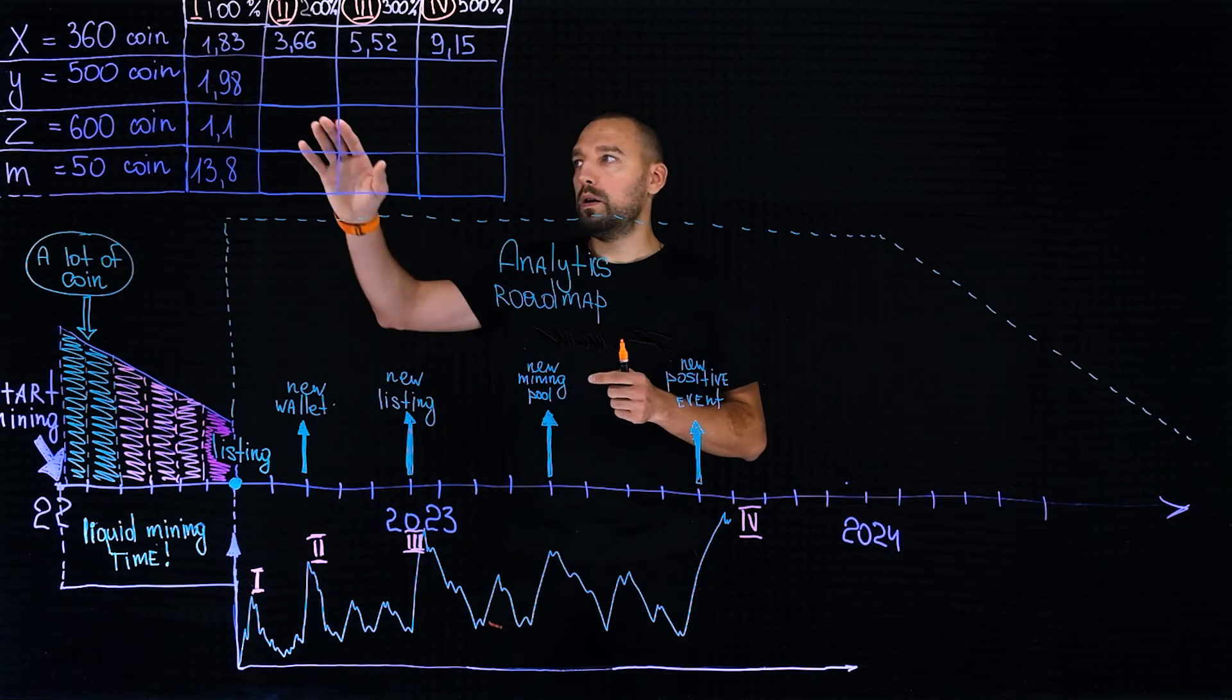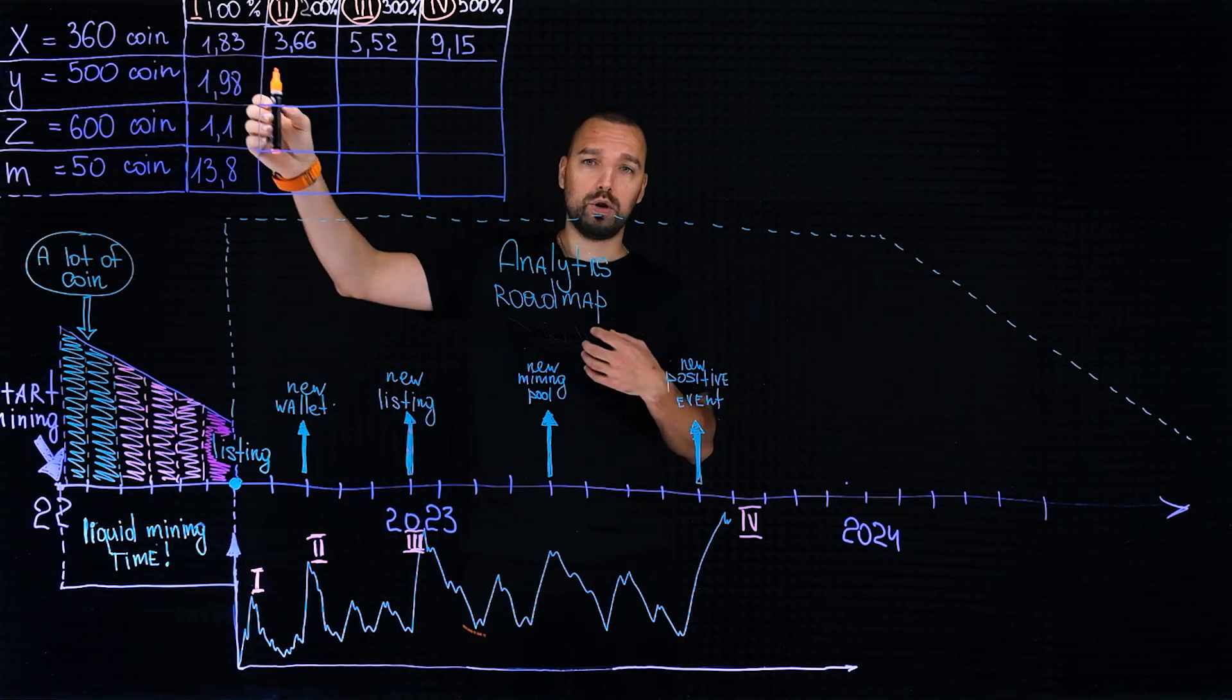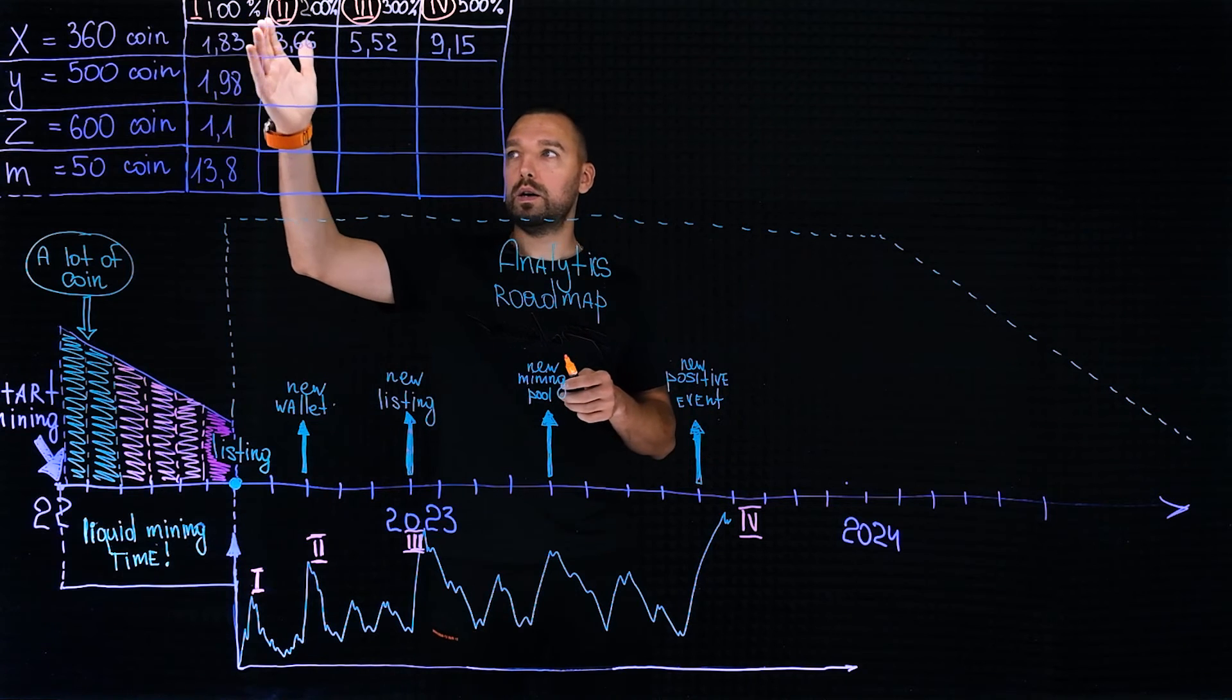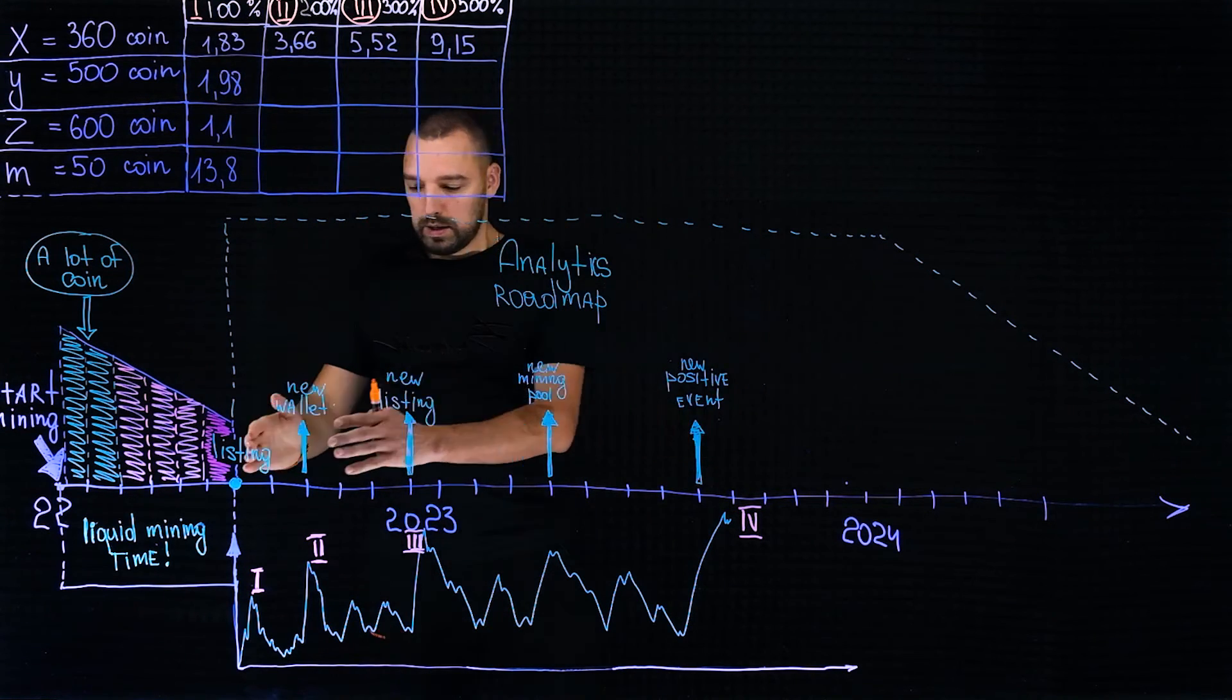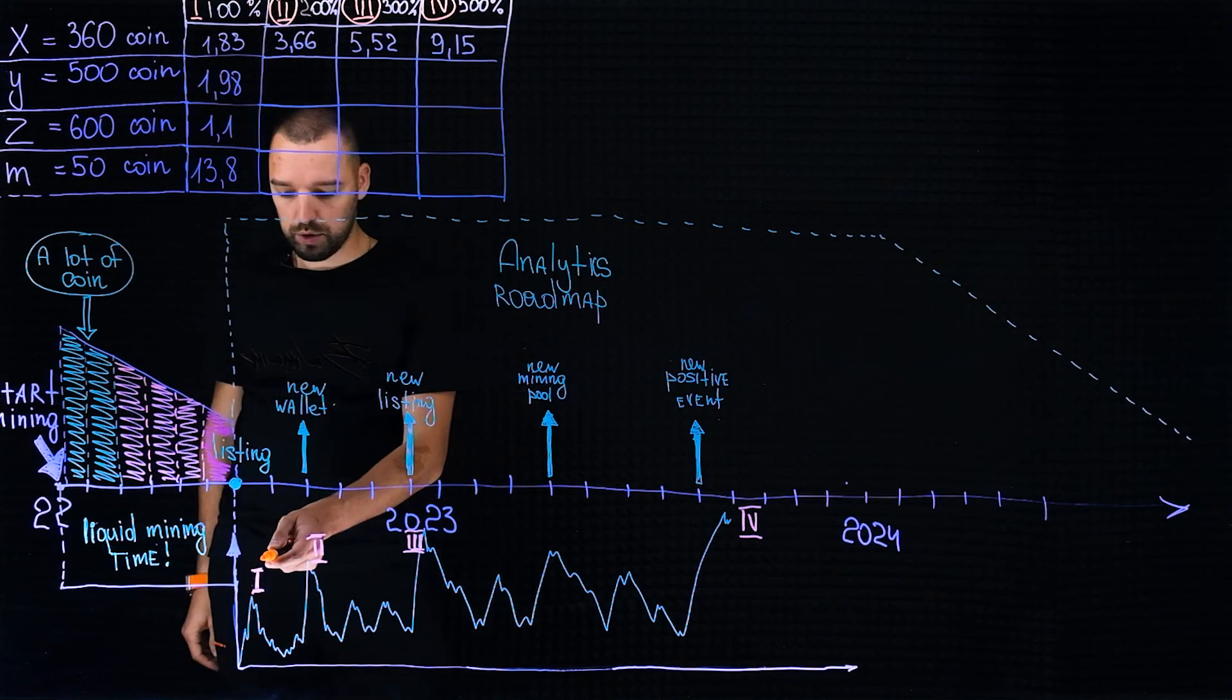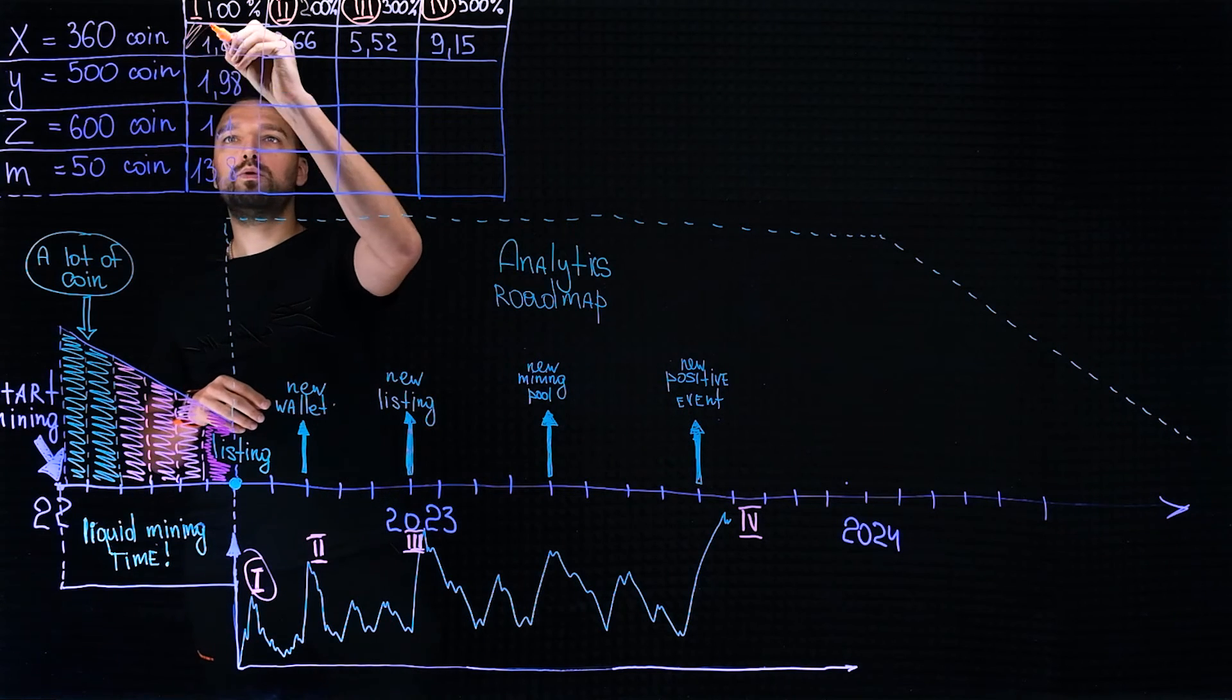Let's take an example. We have divided the X project into four stages. The first stage is 100 coins which we put up according to the previous video at the rate of 1.83. This is order number one, this is order number two, order number three, and order number four. Respectively, according to the time of development of the project, we see that from the moment of listing one order has worked and this gives us a primary payback. The first order worked.